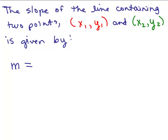The slope of the line containing two points (x₁, y₁) and (x₂, y₂) is given by the following formula. These are just little subscripts — x₁ and y₁ — to show that that's a different ordered pair than the ordered pair (x₂, y₂). Remember, it's the change in the y coordinates over the change in the x coordinates, and change basically means difference.